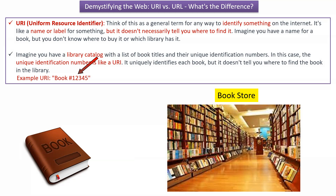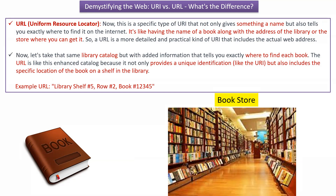The book number is 12345. URL is nothing but Uniform Resource Locator, and URL is a specific type of URI that not only gives something a name but also tells you where to find it on the internet. It is like having the name of the book along with the address of the library or the store where you can get the book. So the URL is a more detailed and practical kind of URI that includes the actual web address.